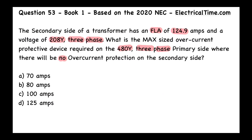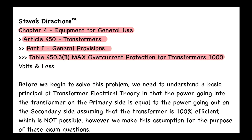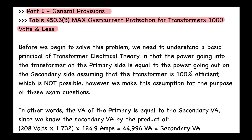The answer is A — 70 amps. The first question to ask is what article applies here: that's Article 450 for transformers, within Chapter 4, Equipment for General Use. Inside Article 450, Part 1 for general provisions, we find Table 450.3(B), which is called the max overcurrent protection for transformers 1000 volts and less.